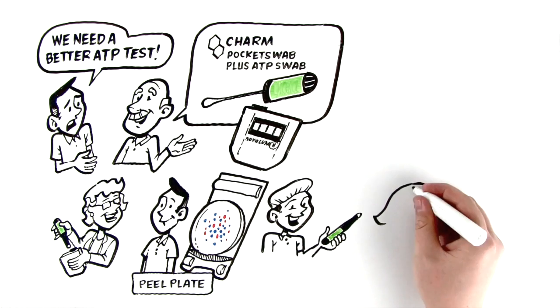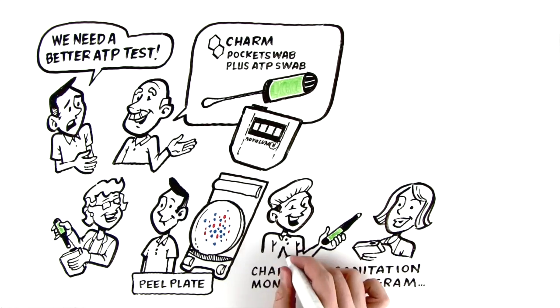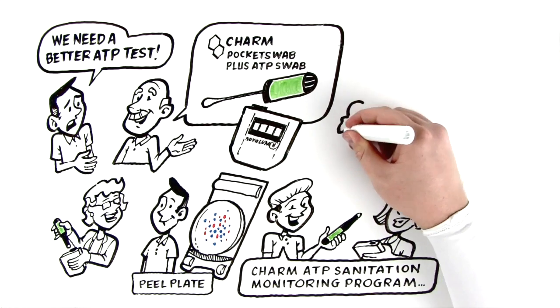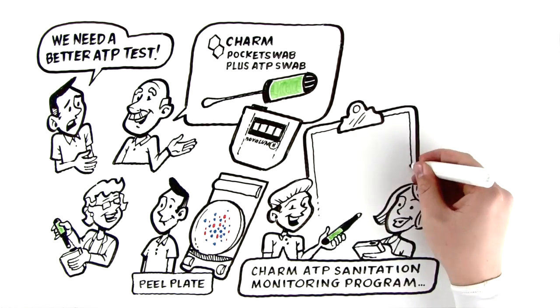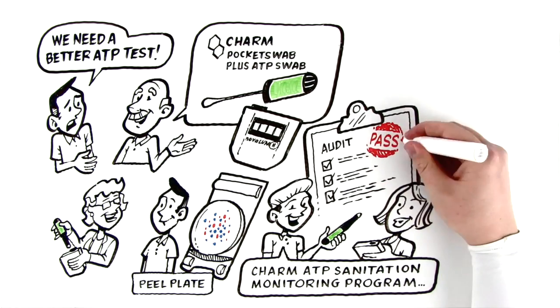Ever since Jim convinced his plant manager, Susan, to implement the Charm ATP Sanitation Monitoring Program, it has become the foundation in satisfying sanitation verification in third-party audits, as they work toward compliance with the preventative control rules in the Food Safety Modernization Act.